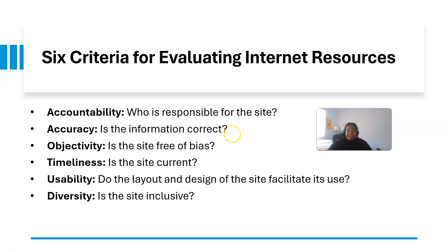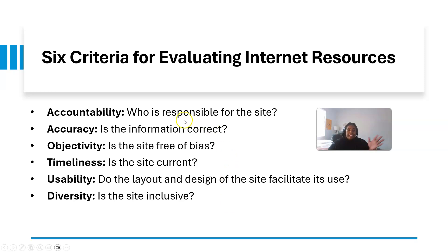Is the information correct? Is it free of bias — are there any economic or political biases associated with this information? Is the site and information current? Does the layout and design facilitate use? Websites with disinformation or misinformation might have a lot of ads or even misspellings. Think about the design of the website in addition to the other criteria. And is the site inclusive? If you're looking for materials relevant to different populations, put that in your search as well.